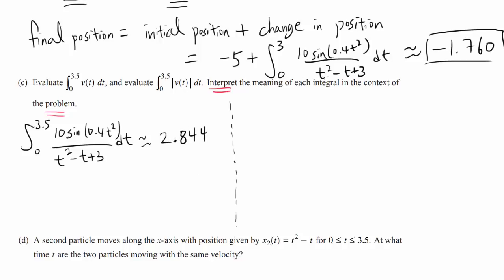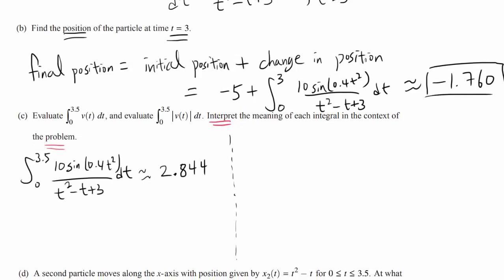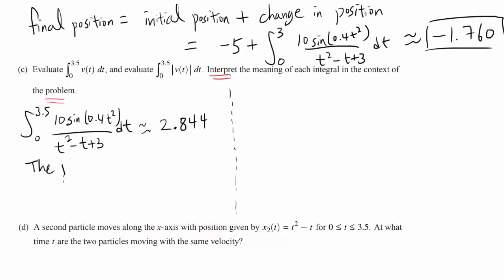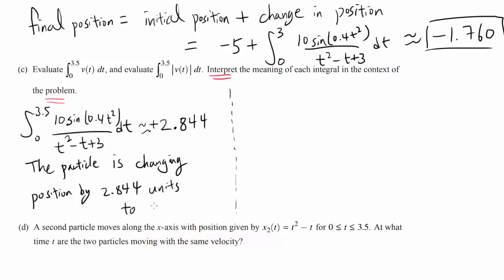What does 2.844 mean in context? This means the particle is changing position by 2.844 units, and since it's positive, the particle is moving to the right from t equals 0 to t equals 3.5. So the first integral represents the change in position, or in other words, the displacement of the particle.